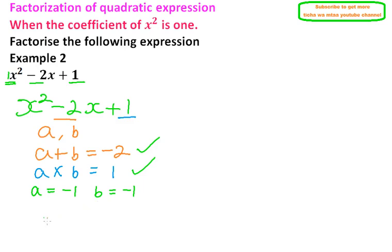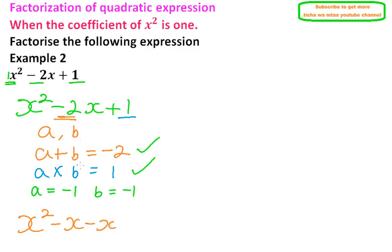We now rewrite our quadratic expression. We have x squared, and instead of writing minus 2x, we split it as minus x minus x — since minus x minus x is the same as minus 2x, we have not changed the expression. Then we add 1.